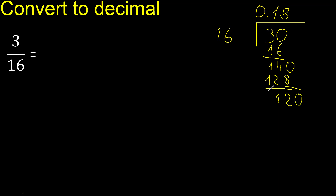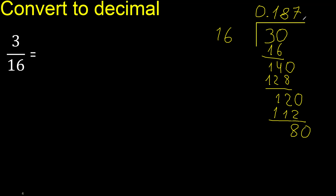Point is here. 120. 16 — multiply by which number? 16 multiply by 7 is 112. Subtract. Complete. 80. 16 — multiply by which number? Multiply by 5 is 80. Subtract: 0, 0. Therefore finish.